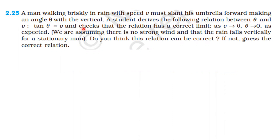The student's derived relation is tan theta equals v, and checks that the relation has a correct limit: as v tends to 0, theta tends to 0, as expected. We are assuming there is no strong wind and that rain falls vertically for a stationary man. Do you think this relation can be correct? If not, guess the correct relation.